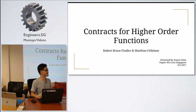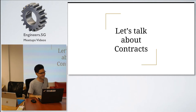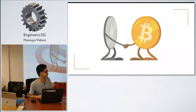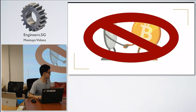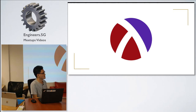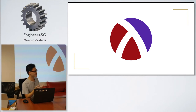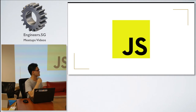Today I'm going to present on the paper 'Contracts for Higher Order Functions'. We're going to talk about contracts — unfortunately not smart contracts. What we're talking about is contracts on functions in programming languages. This concept of contract is mainly popularized by the programming language Racket, which is a dialect of Lisp, with the tagline 'programming language programming language'.